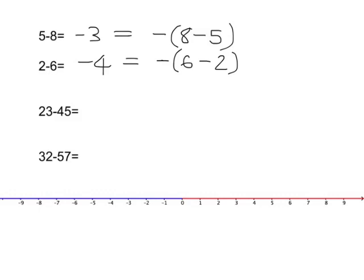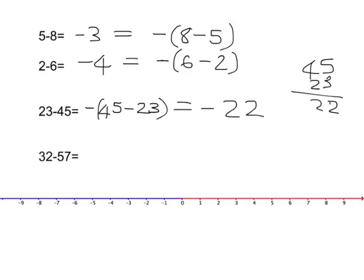And, that will help us to easily get answers to something like this, 23 minus 45. We can then say, I know 23 minus 45 is going to be exactly the same answer as 45 minus 23, except it will be negative. 45 minus 23 is something that I can do very easy. And, so, I get my answer here very easily. The answer is negative 22.